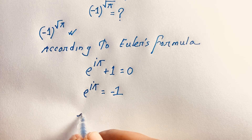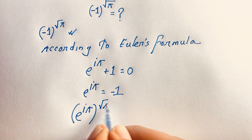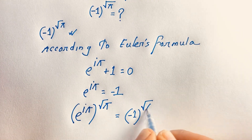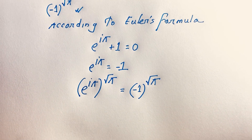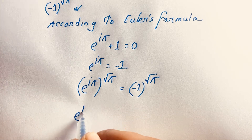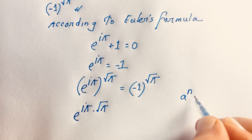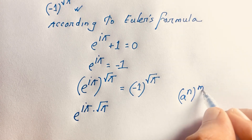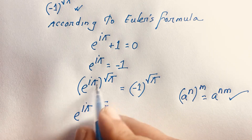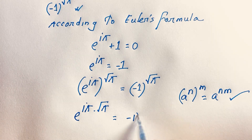Now I use both sides to the exponent square root pi. This equation becomes e to the power i·pi, whole to the power square root pi, is equal to minus one to the power square root pi. We know the exponential law: a to the power n, whole to the power m, equals a to the power n·m.